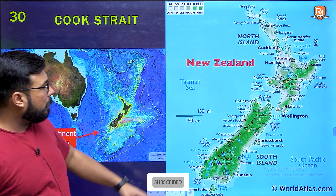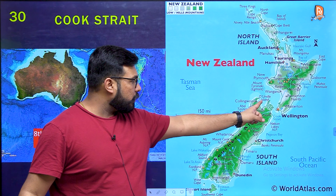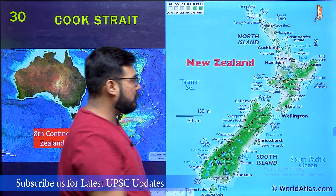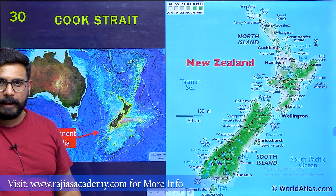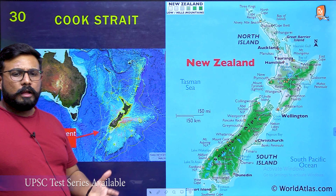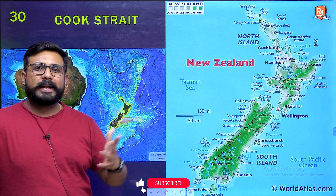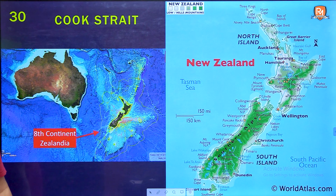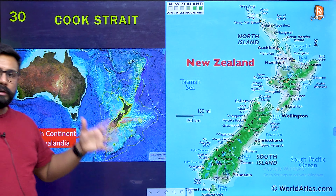Since we are discussing Oceania, and New Zealand has recently seen a series of natural disasters — Cyclone Gabriel came — the Cook Strait, which is the small water channel separating New Zealand's North and South Islands, also saw a recent earthquake. New Zealand is basically our 8th continent — it is submerged, and only some part has emerged above the ocean surface. This is known as Zealandia — New Zealand is named after it. It is the submerged 8th continent.